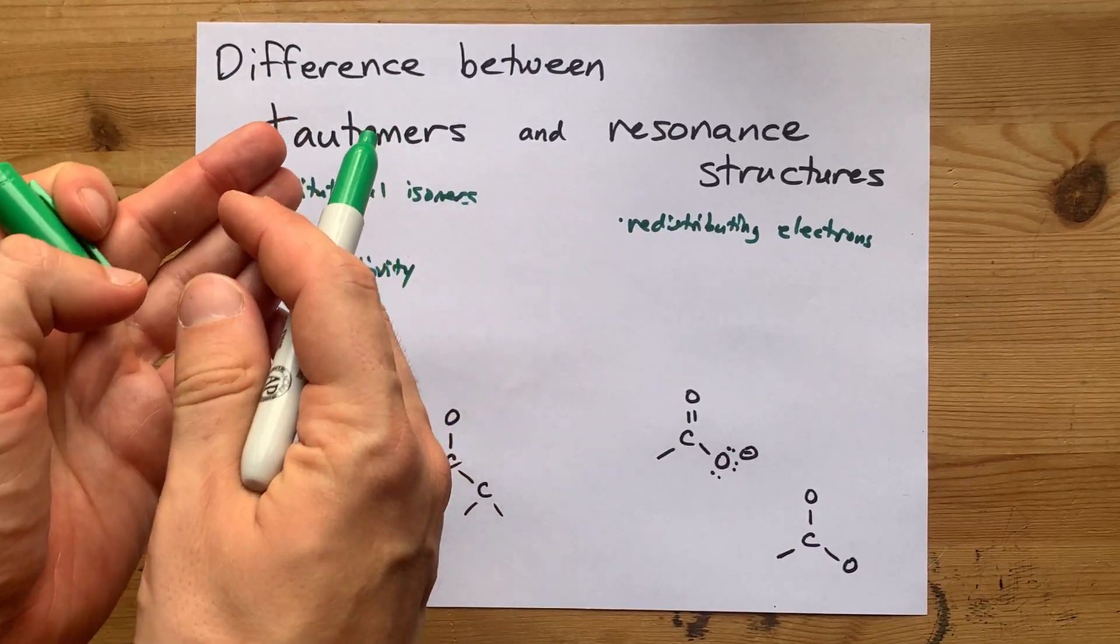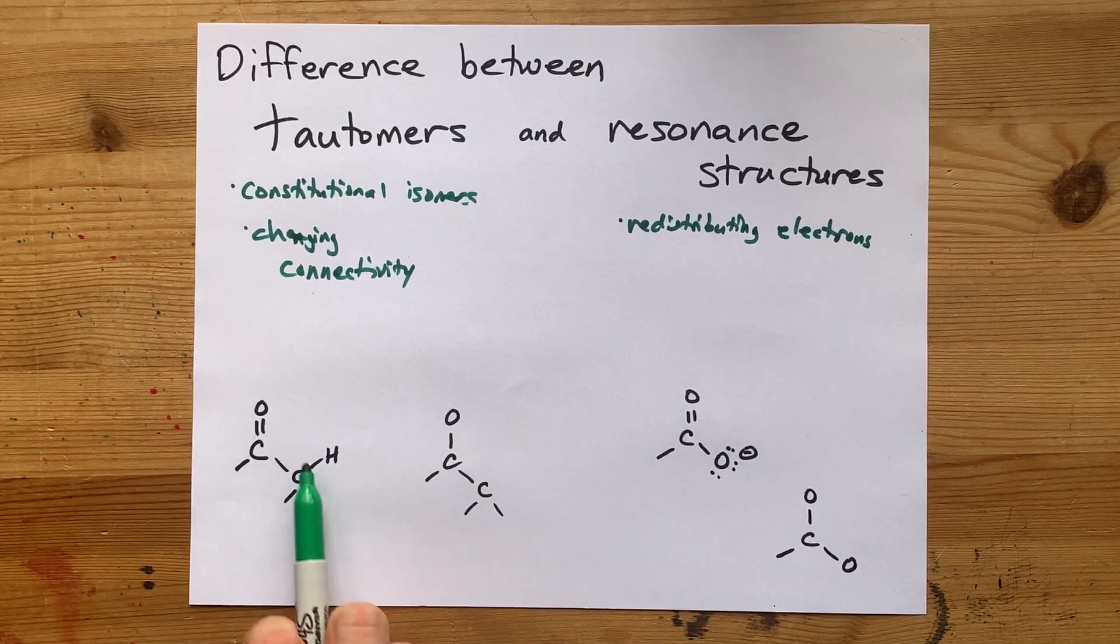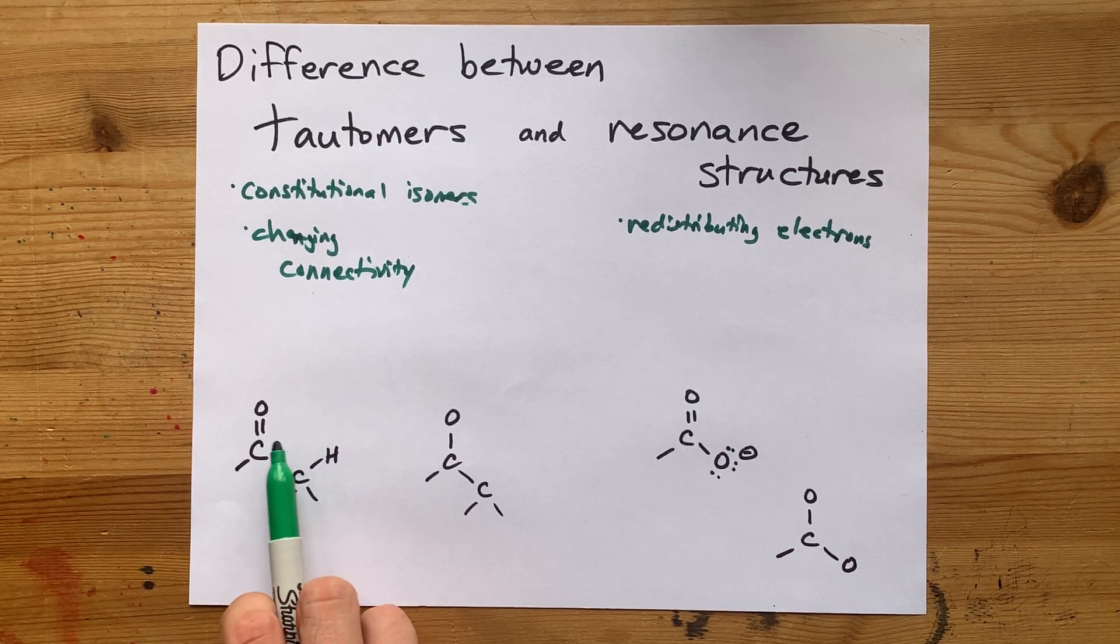The classic tautomer example is keto-enol tautomerism. Here I have what could be a ketone and what matters is that there is a hydrogen on the alpha carbon. That's the carbon attached to the CO group.